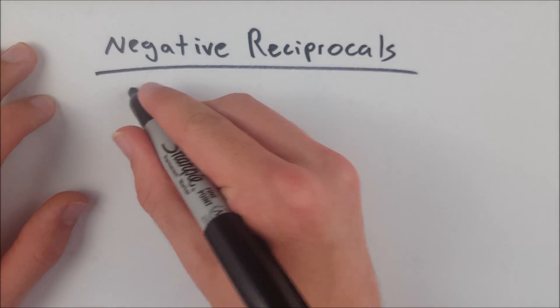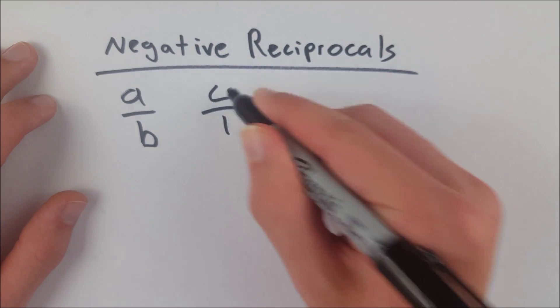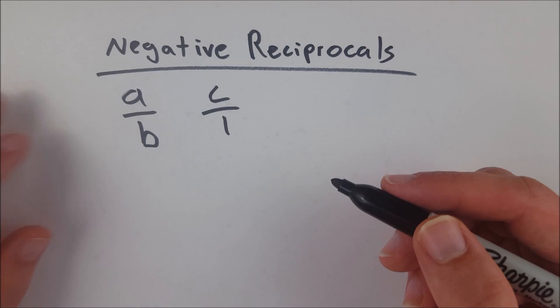Well, let's say you have some fraction a over b. If you don't have a fraction, you have an integer. Let's just call it c over 1. You can put it over 1 and it will remain unchanged. Putting it over 1 doesn't change anything.